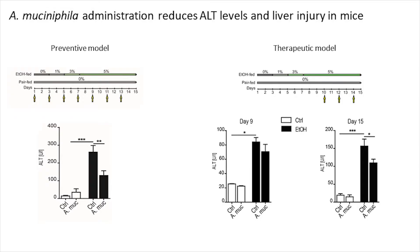First we could demonstrate that indeed the concentrations in the stool go up, which was very important. But secondly we could show that gavaging of Akkermansia muciniphila improved liver disease. Administration of Akkermansia muciniphila was beneficial — it suppressed inflammation in the liver, it reduced the lipid content, and overall it resulted in well-being of animals.